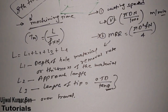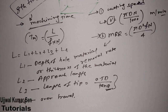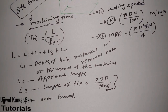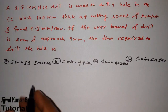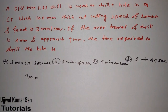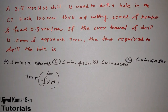Now we'll go through the most important exam questions. I'll first show the simple, accurate way to solve them, then the super-fast method. Time management is critical in competitive examinations. For the first question, we need to find the machining time tm. The formula is: tm = L / (f × N).